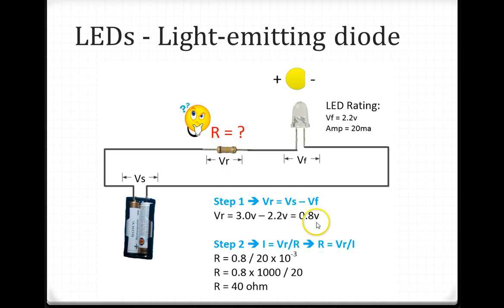Now I plug the value in: 0.8V divided by 20mA. I can write 20 times 10 raised to minus 3. This thousand will go on the numerator, so now it's 0.8 times 1000 divided by 20, and that gives me a resistance value of 40 ohms.